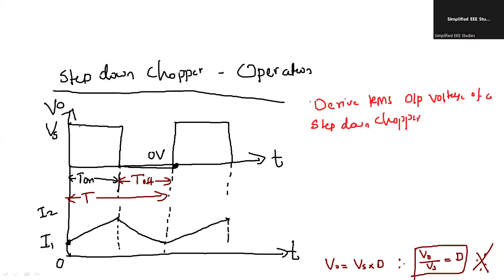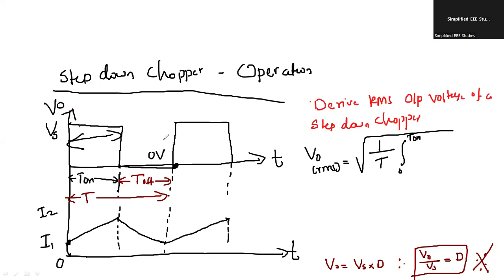With respect to the waveforms, let us write V_naught_RMS equal to the formula: square root of (1/T) × integral from 0 to T_on of Vs² dt. We will consider only when the output is high. By simplifying: Vs can be taken outside — square root of Vs² is Vs — and the integral gives (T_on / T). So V_naught_RMS = Vs × √(T_on / T).